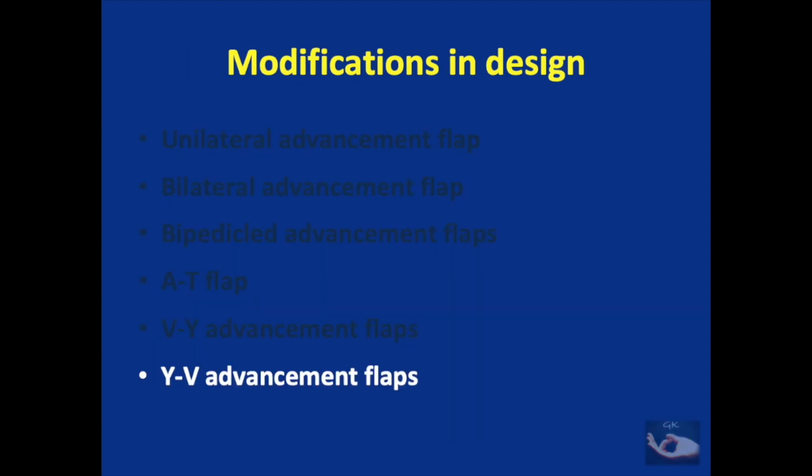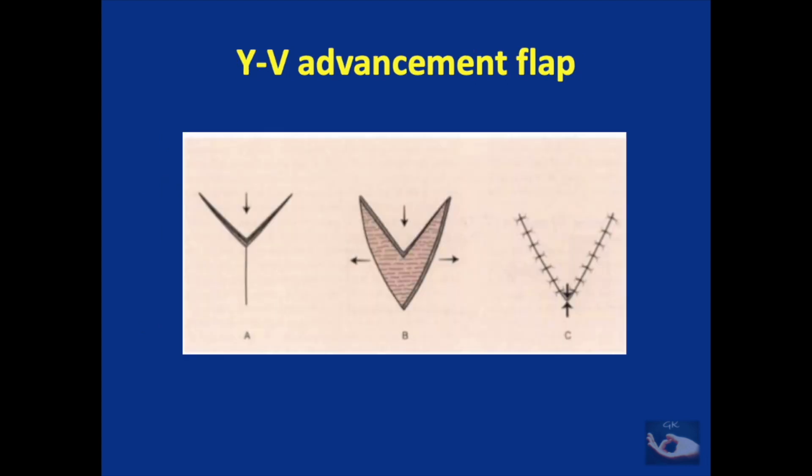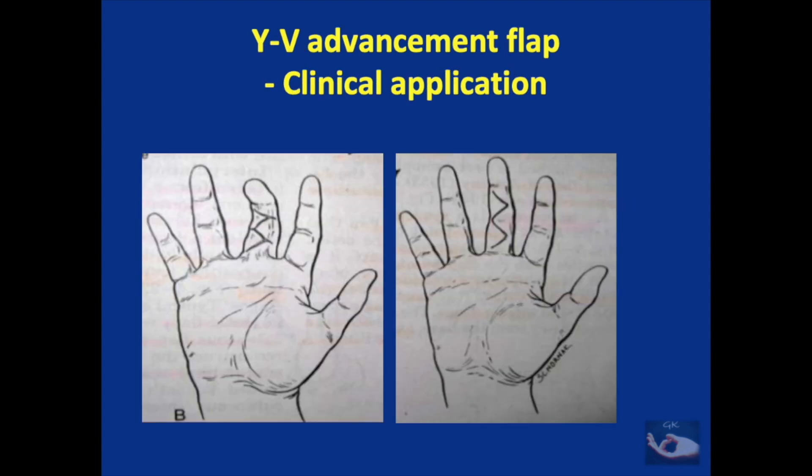In a similar way, Y to V advancement flaps also can be done. Here, a Y-shaped incision is made, the flap is raised, and it is closed in the form of a V. These flaps can be used specifically in two conditions in hand surgery: one is release of contractures, and second is making incisions for Dupuytren's contracture release. After the contracture release is done, there is going to be excess skin needed for closure of the suture line, so if the incisions were marked as Y, they can be closed as a V.